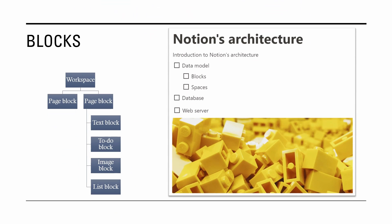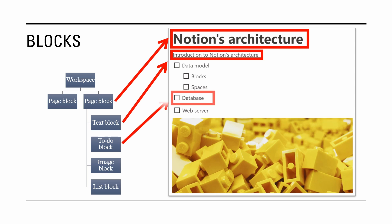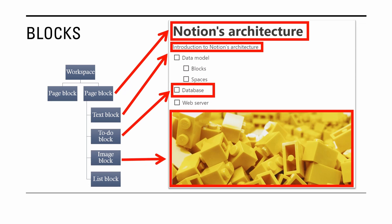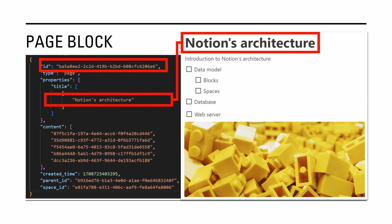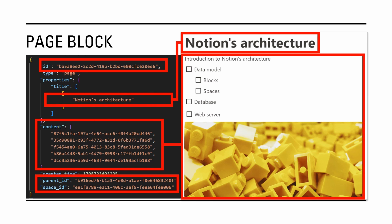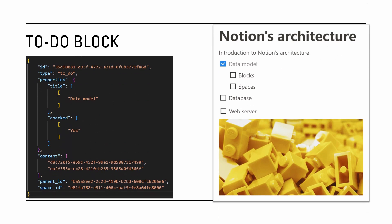Here is an example of how Notion uses blocks to store a page with a paragraph and a few to-do items. The page is stored in a page block that contains a unique identifier of a page, title, references to child blocks, a reference to parent page, and a reference to a workspace. Child blocks store the content of the page.